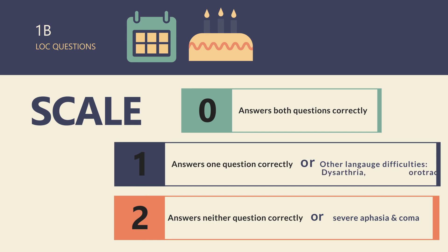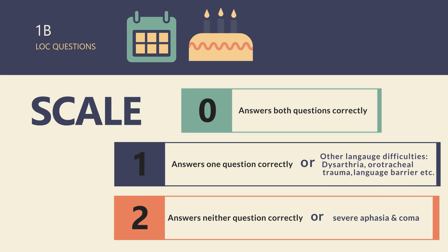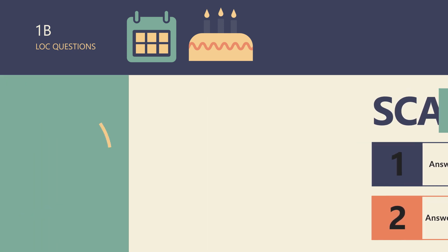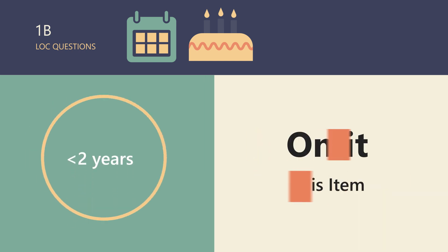are given a score of 1 if their inability to speak is due to severe dysarthria from any cause, language barrier, or any other problem not secondary to aphasia. This item is not scored for infants below two years of age.